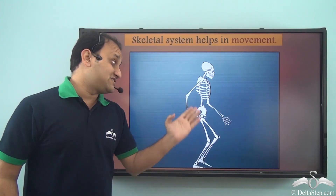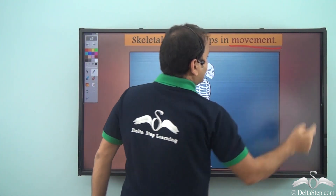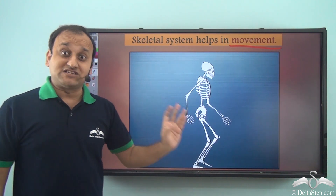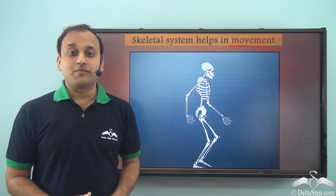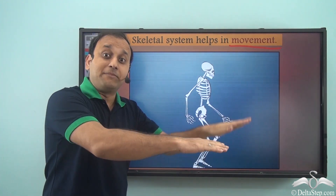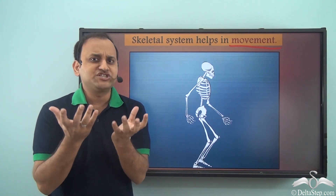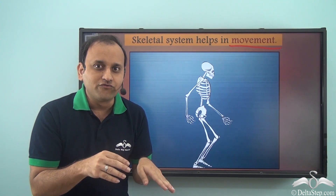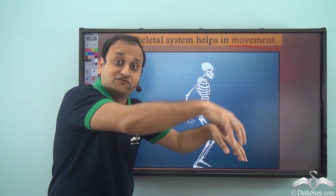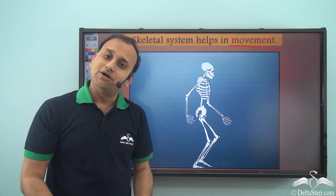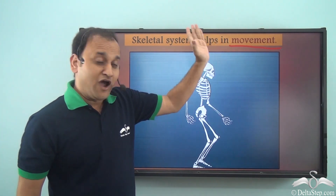Another important function of the skeletal system is that it helps in movement. It is because of the skeletal system that we are able to move, because it provides structure to our body. If you don't have a skeletal system, you would be a shapeless blob — you cannot even crawl. It is because of the skeletal system that you are able to move from one place to another.